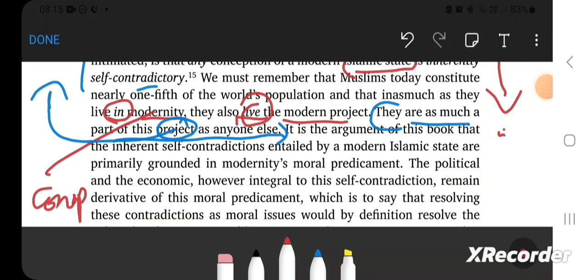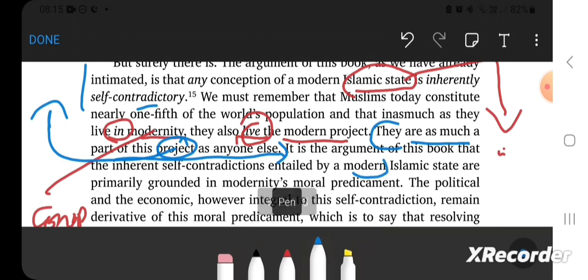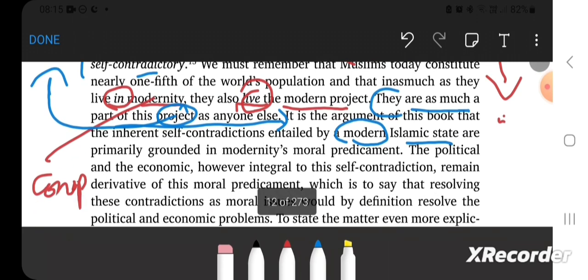So it is the argument of this book that the inherent self-contradiction entailed by a modern Islamic state. See, when you don't have good philosophical training you do these sort of things. Now he calls it modern Islamic state. Before he said modern states are Islamic states primarily grounded in modernity, modernity's moral predicament.